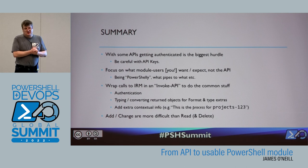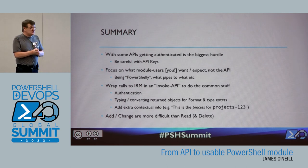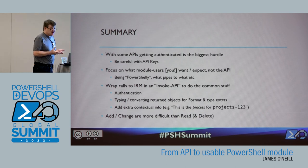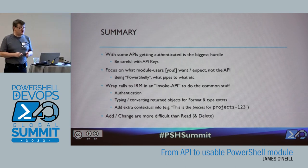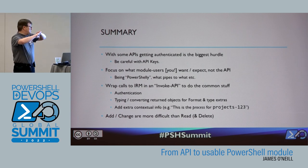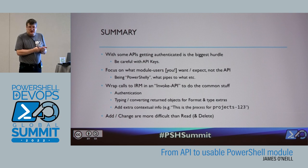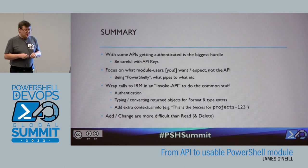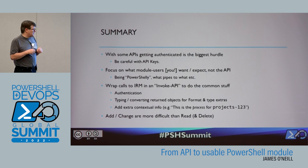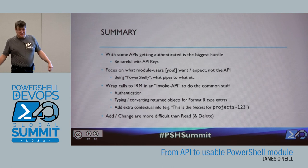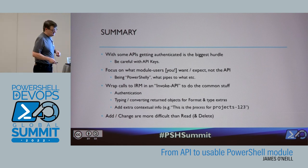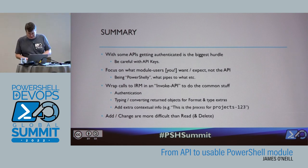Quick summary: getting authenticated can be the biggest hurdle — take care with API keys. Once you've got it, focus on the user expectation, not the API. Be PowerShell-y. If you can, wrap all your calls into an Invoke-API-Method — that saves an awful lot of repetition. Reading is easier than anything; adding and changing are the more difficult ones. And that's it — thank you for your patience, sorry for over-running.